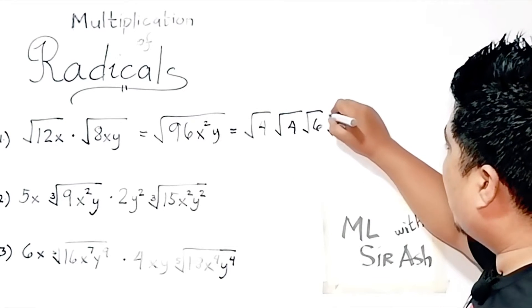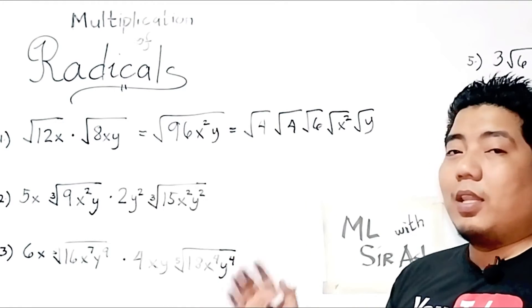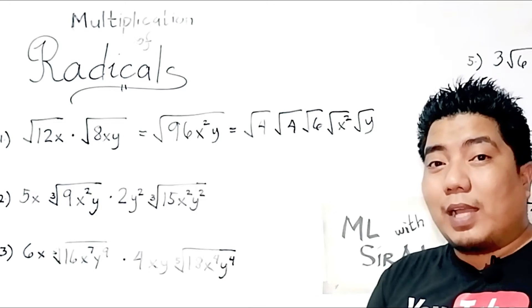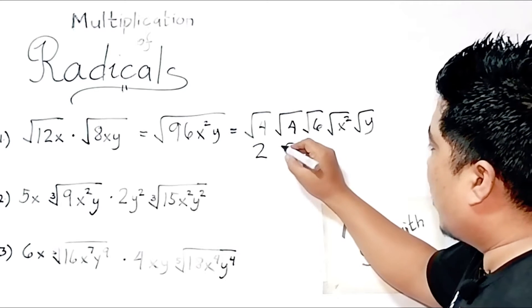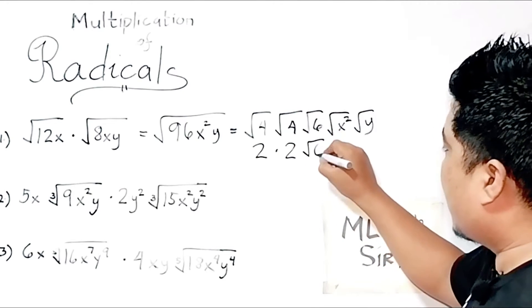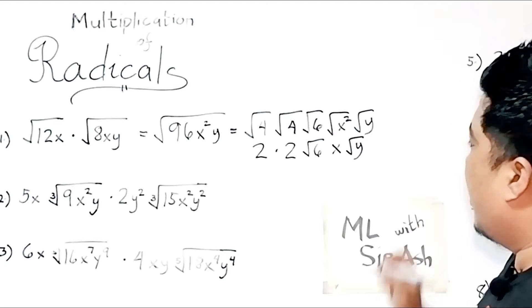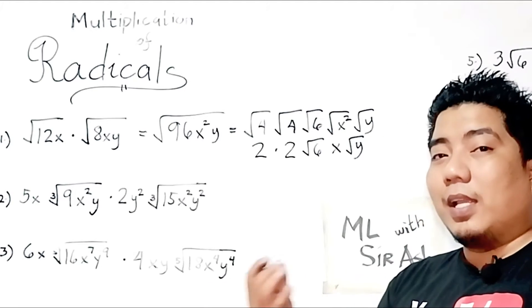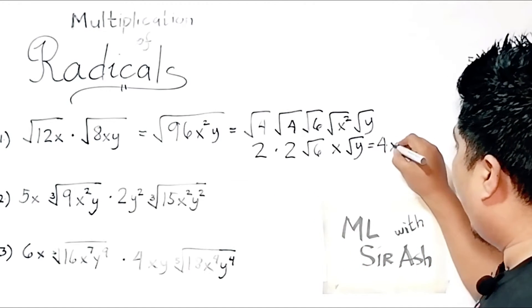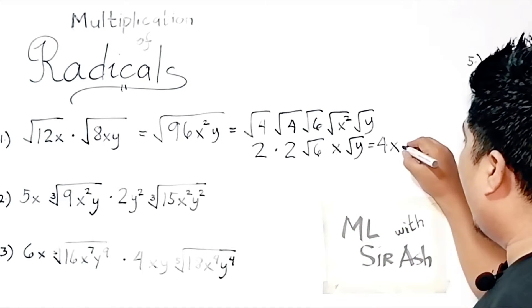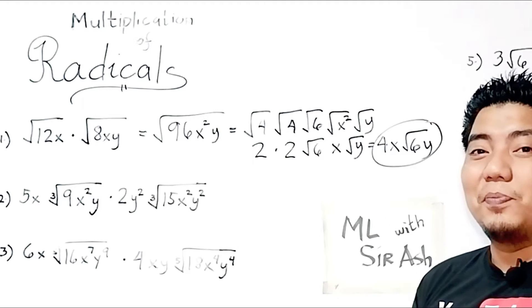Now for our variables: we have the square root of x squared and the square root of y. I have broken down my radicals into smaller bits to simplify them. The square root of 4 is 2, and the square root of 4 is again 2 — so those are multiplied together. The square root of 6 remains the square root of 6. The square root of x squared is x. The square root of y is still the square root of y. So 2 times 2 times x gives 4x, and the square root of 6 times the square root of y gives the square root of 6y. This is your final answer.